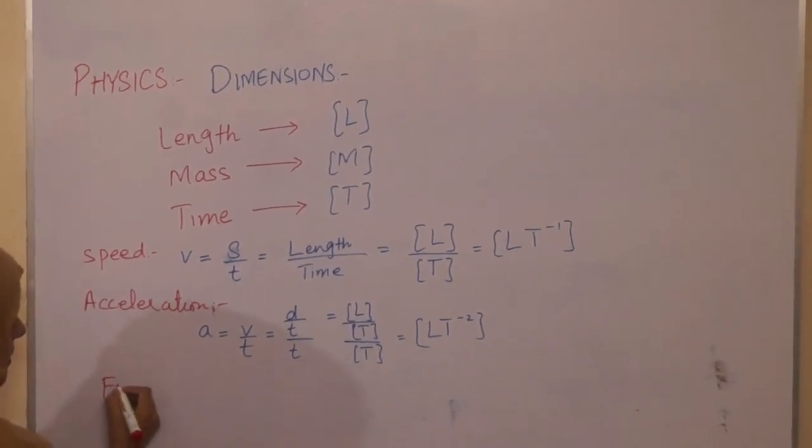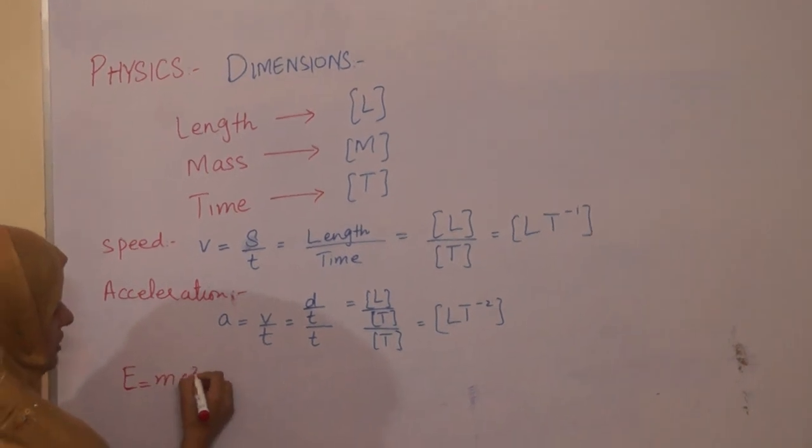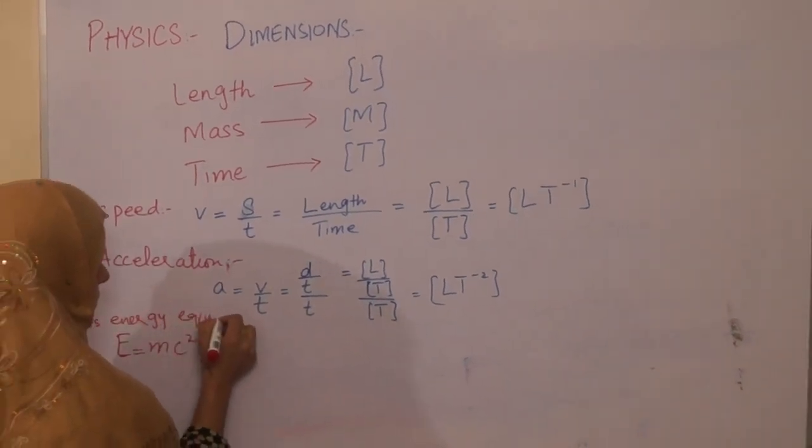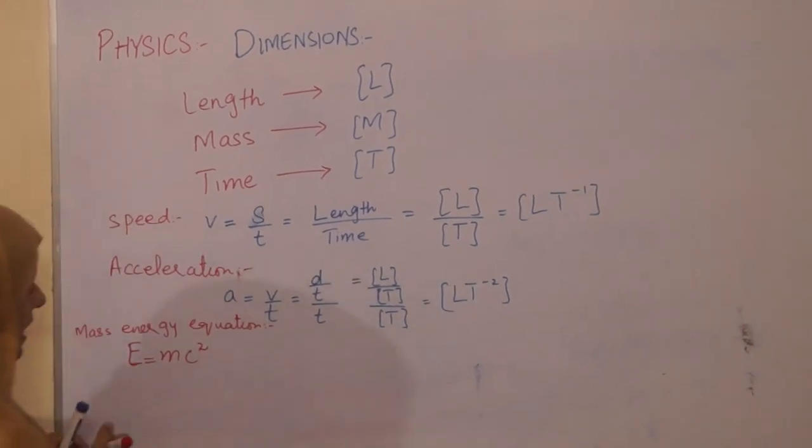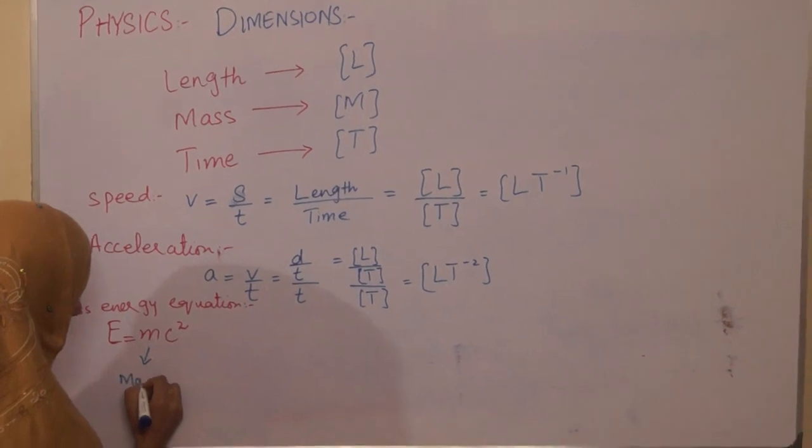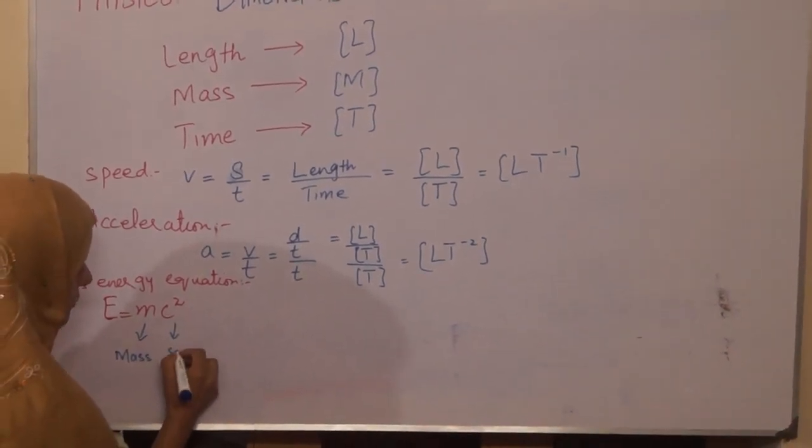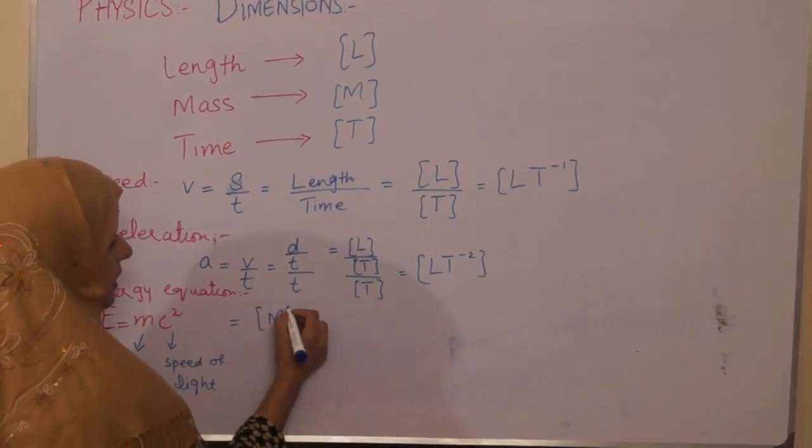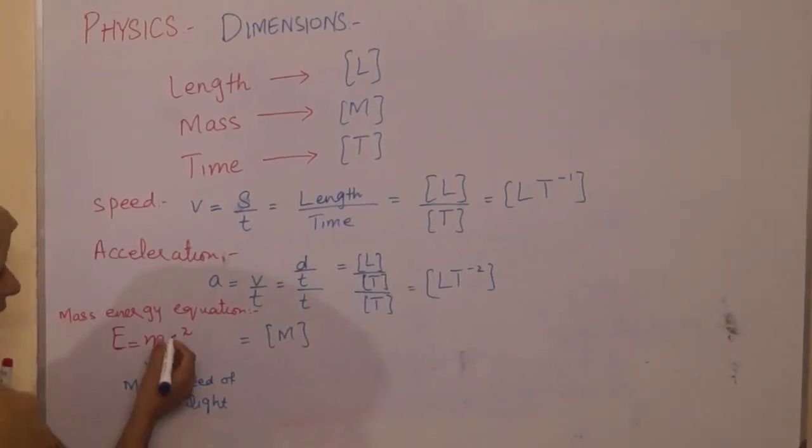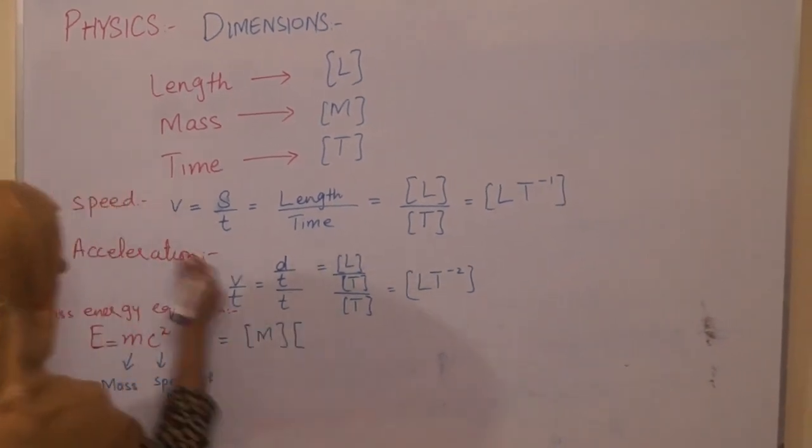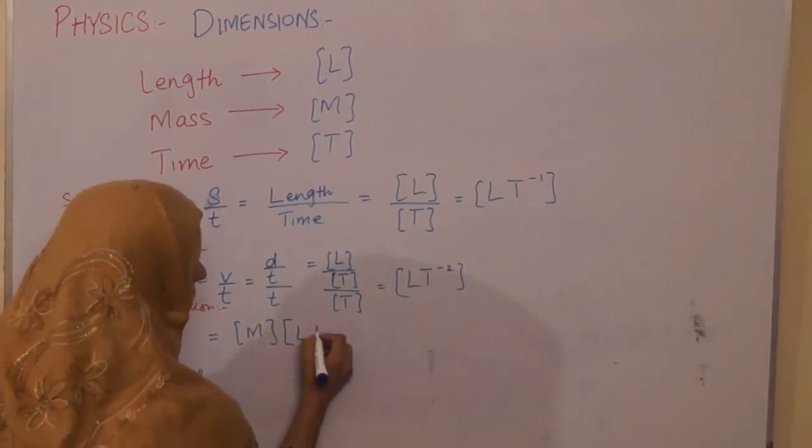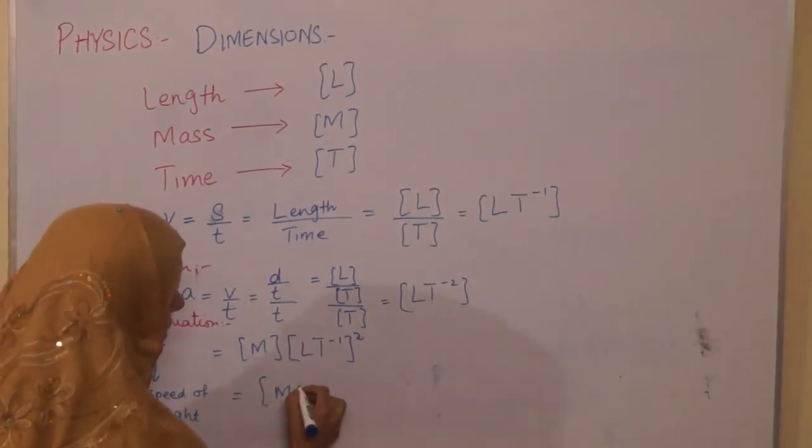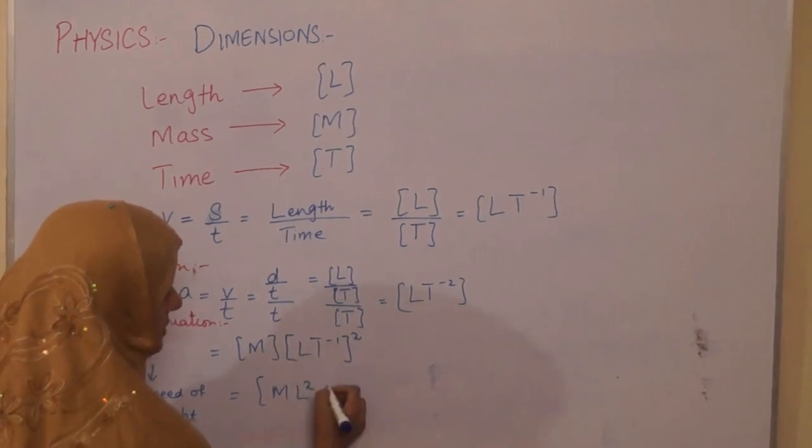If we talk about Einstein's mass energy equation, E equals mc squared, then m is the mass and c is the speed of light. We denote m with capital M enclosed in square brackets, and c squared is the speed of light. We have dimension of speed, it's LT minus one squared. So we have dimensions for mass energy equation is M L square T minus two.